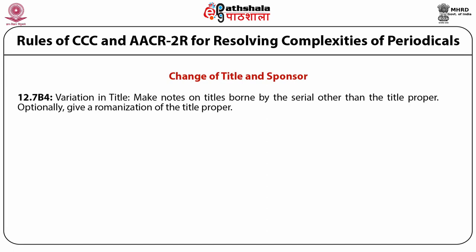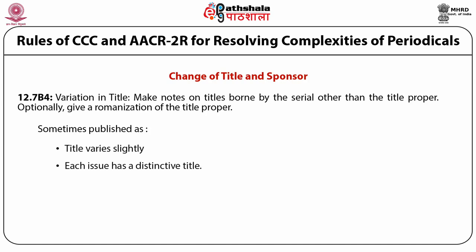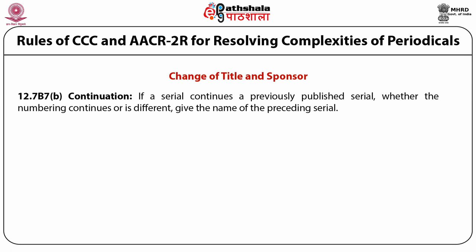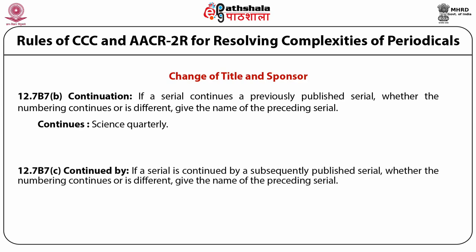Rule 12.7.B4 — variation in the title: sometimes published as [title]; title varies slightly; each issue has a distinctive title. Rule 12.7 — continuation: if a subsequently published serial continues the numbering, whether numbering continues or is different, give the title of the preceding serial. For example: Continues: Science Quarterly. Rule 12.7.B7 — Continued by: if a serial is continued by a subsequently published serial, give the title of the succeeding serial. For example: Continued by: Science Monthly.